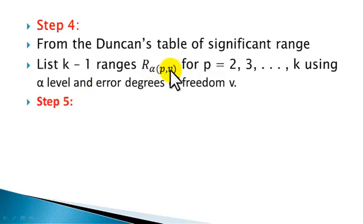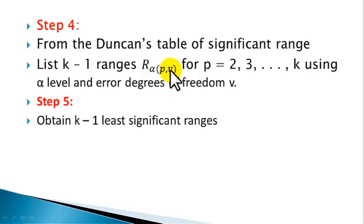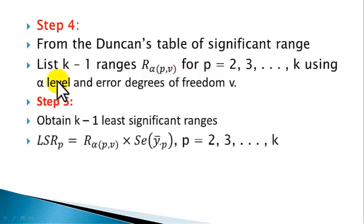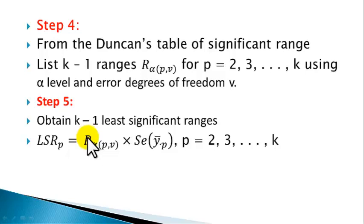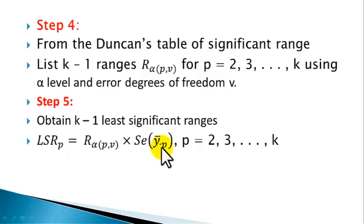Step 5: Obtain k-1 least significant ranges using the following formula — LSR_p equals r-alpha(p, v) times the standard error of mean of treatment p, for p running from 2 to k.